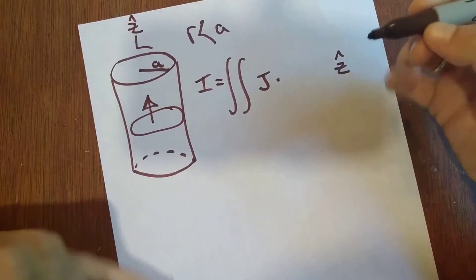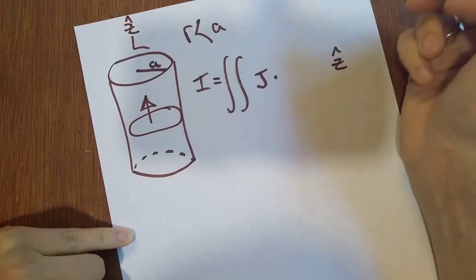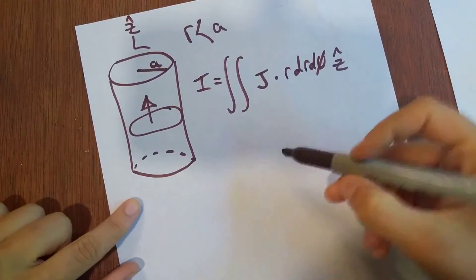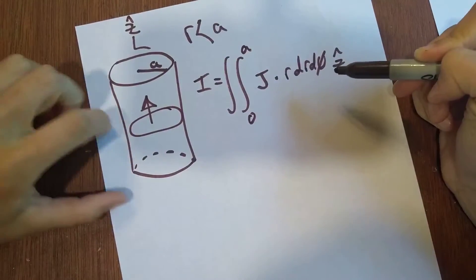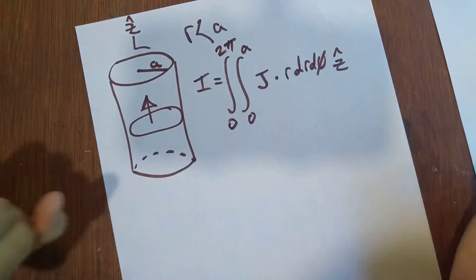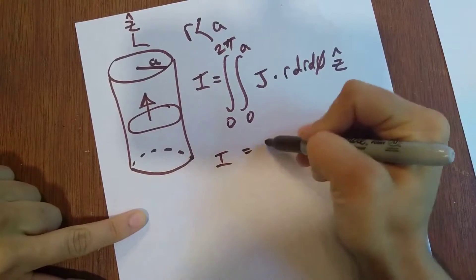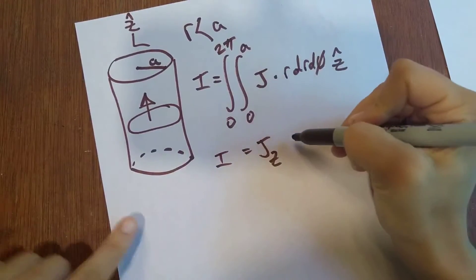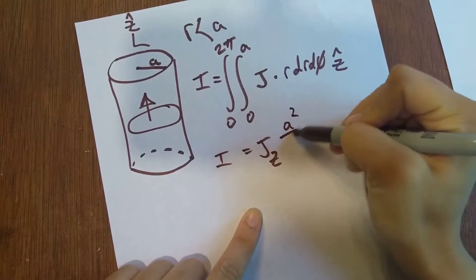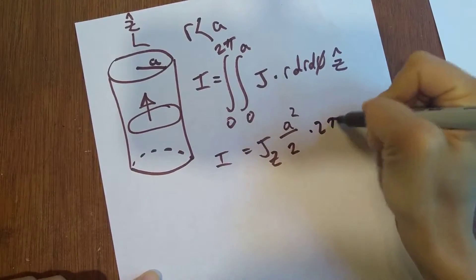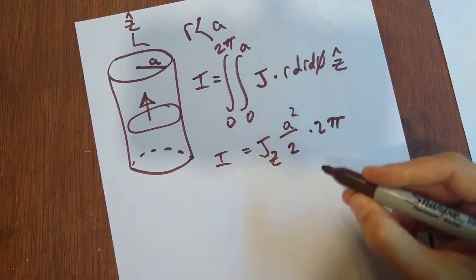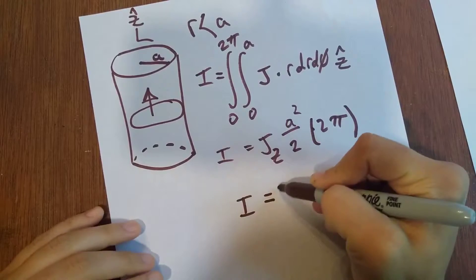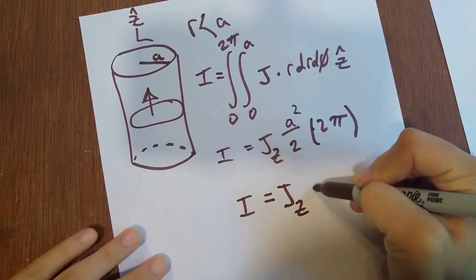And then from there, we just kind of fill in the blanks. We're not going to have a DZ since we have a Z unit vector. But we are going to have a DR and a D phi. So we're going to have DR DR D phi. And what's our bound for R? Our bound for R is A. And our bound for phi, it's this whole thing. So it's going to be 2 pi. Alright, carrying this through. So we're going to have I equals J sub Z A squared pi.